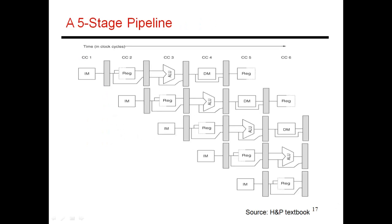We've gone through a detailed example of data dependence in our five-stage pipeline, and we concluded that if you have a producing instruction, the consumer has to be delayed by at least two cycles. You need this gap to make sure that the write into the register file happens before the read out of the register file. This introduces bubbles in the pipeline, or stalls, which hurts my IPC.